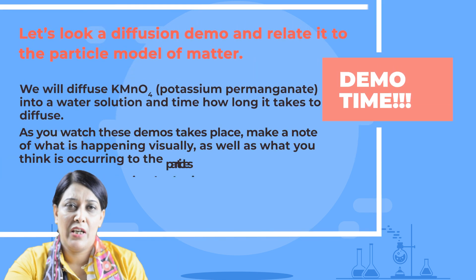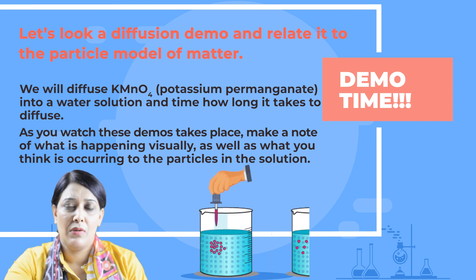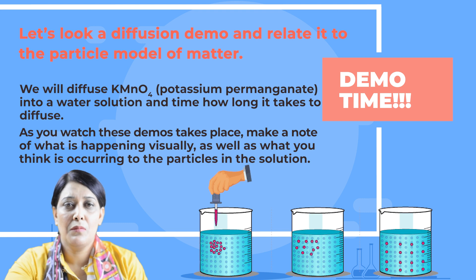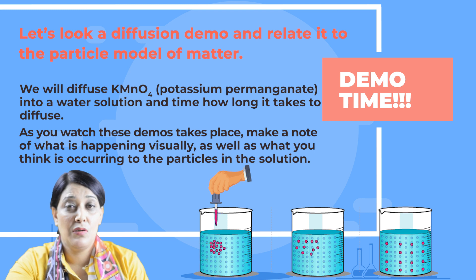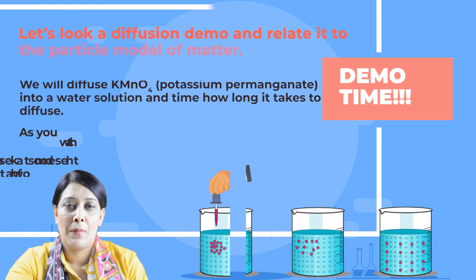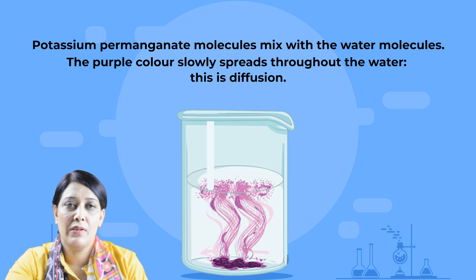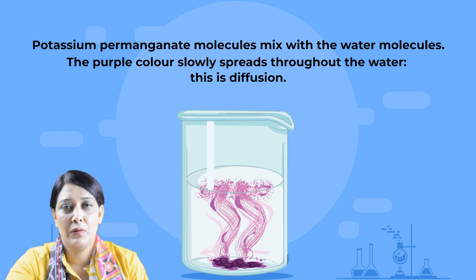Now let's have our demo time. We will look at a diffusion demo and relate it to the particle model of matter. We will diffuse potassium permanganate into a water solution and time how long it takes to diffuse. As you watch the demo, note what is happening visually and what you think is occurring to the particles in the solution. The potassium permanganate molecules mix with the water molecules, and the purple color slowly spreads throughout the water. This is diffusion.